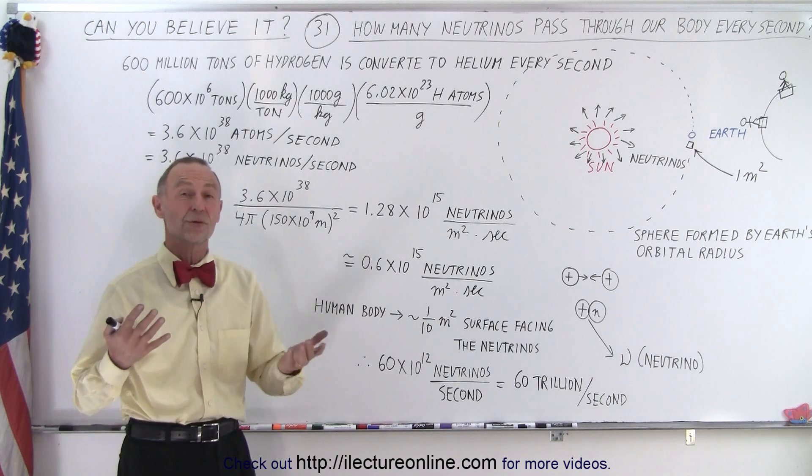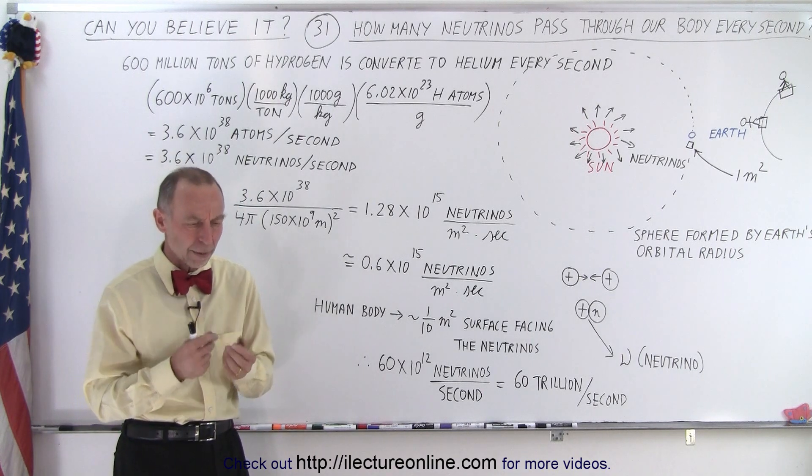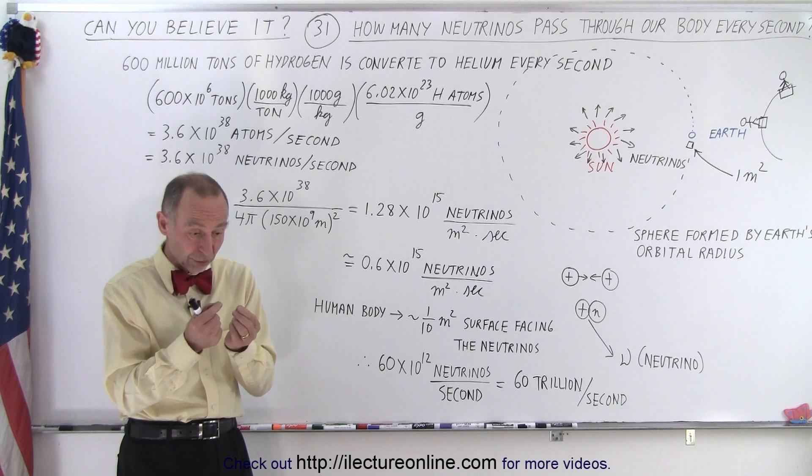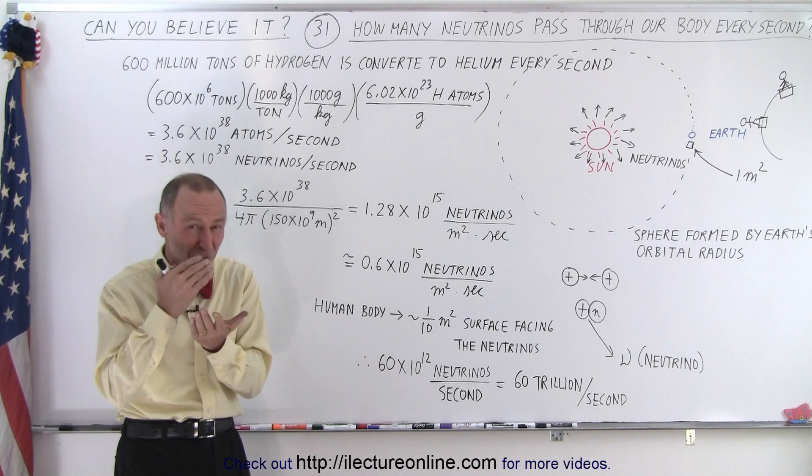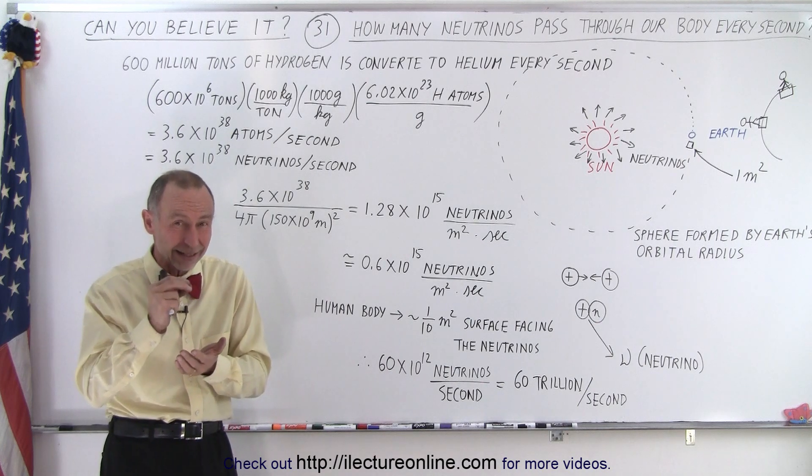But first of all, what is a neutrino? Well, we'll get into that a little bit more, but what we need to know about neutrinos is that they're very tiny little particles that have virtually no mass, a very small amount of mass, a lot less than an electron.